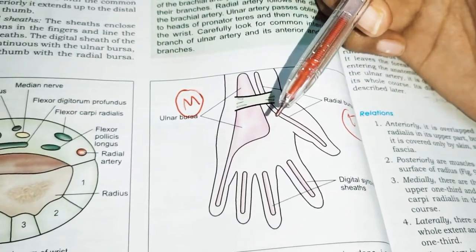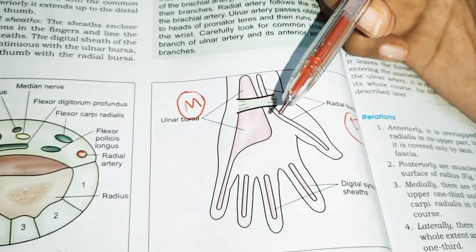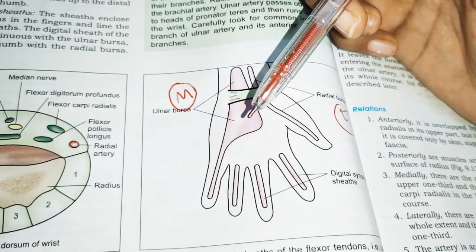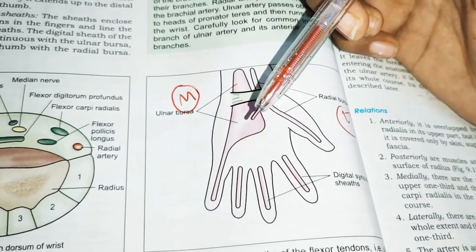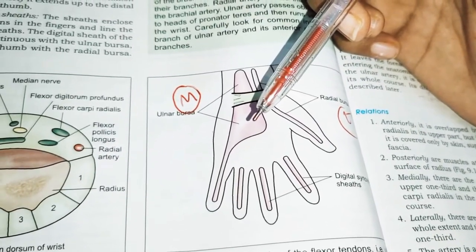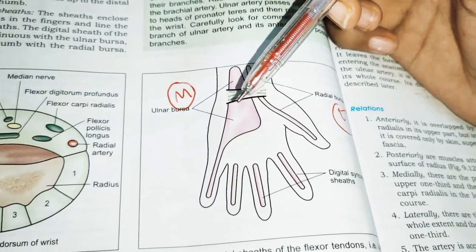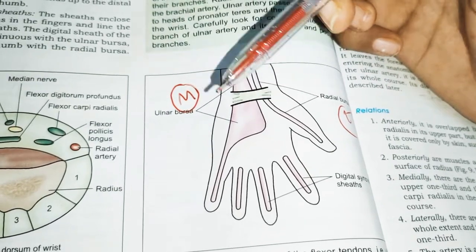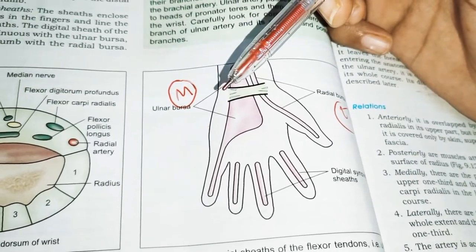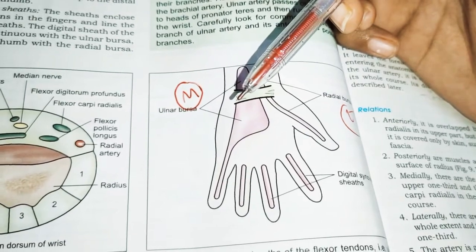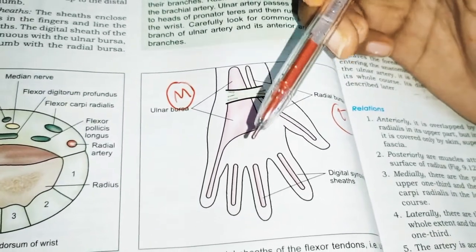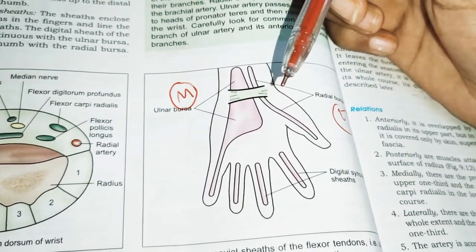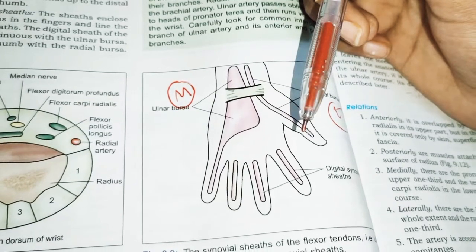The ulnar bursa is made up of both flexor digitorum superficialis and flexor digitorum profundus. Flexor digitorum superficialis is a superficial muscle of the forearm, and flexor digitorum profundus is a deep muscle of the anterior side of the forearm. Both are enclosed in a common synovial sheath while passing deep to the flexor retinaculum.